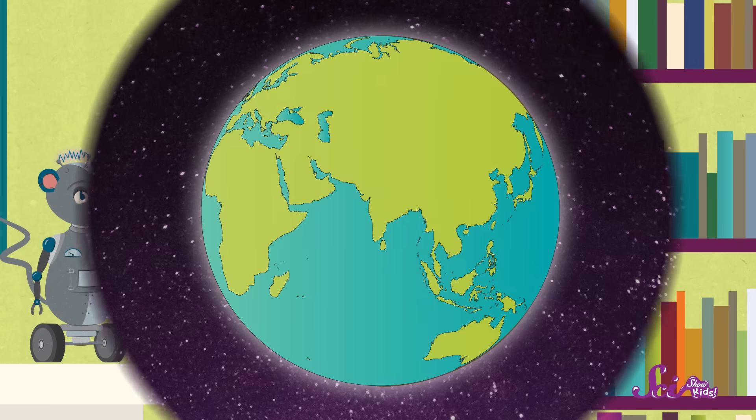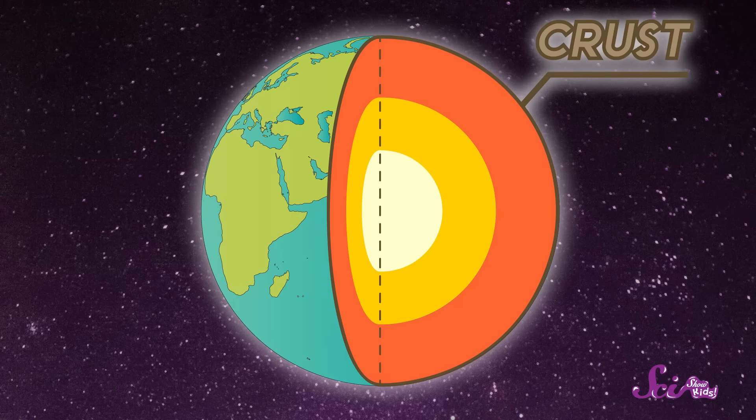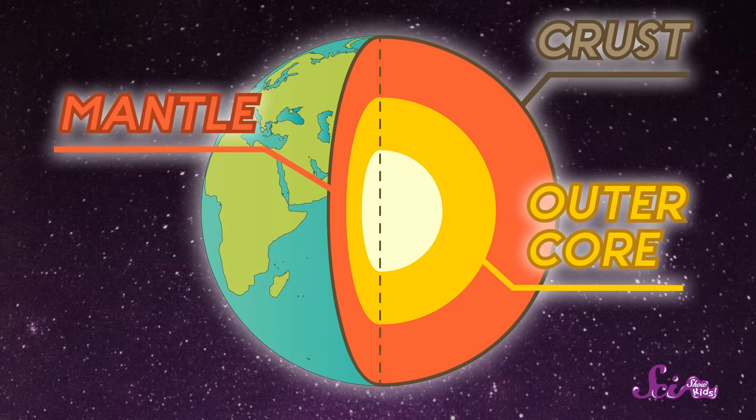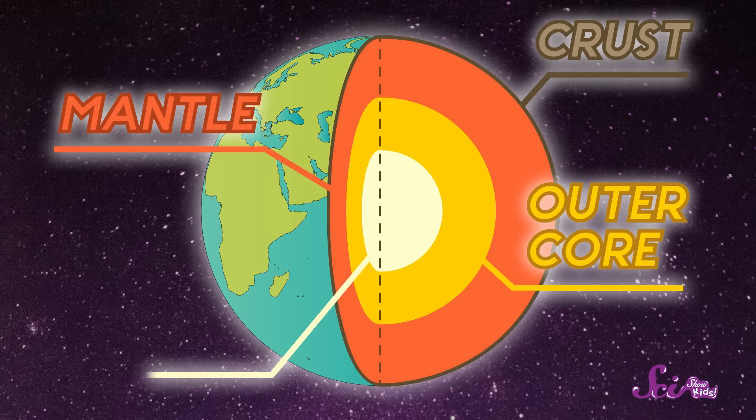So let's review our tour of the inside of the Earth. We have the brittle, rocky crust on top, the soft, bendy mantle next, the liquid outer core, and finally, the solid, super hot inner core.